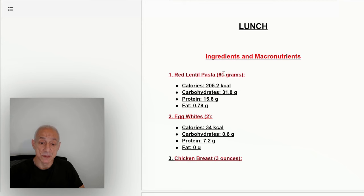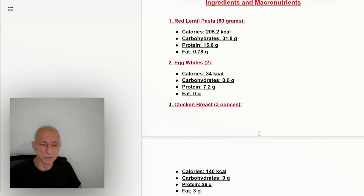I eat 60 grams. I have a measuring thing where I measured 60 grams. About 225 calories, 32 grams of carbs, and about 16 grams of protein. The fat is nonexistent. Inside the pasta I put two egg whites, 34 calories, 7.2 grams of protein. The reason why I put the egg whites is to make sure it's complete protein. The egg whites are the best.